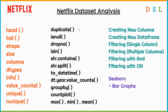To remove the duplicates, we will use the Duplicate function. To find the null values, we will use the IsNull function. To drop the null values, we will use DropAny function. We will use IsIn function, str.Contains function, str.Split, ToDateTime function, and dt.Year.ValueCount function. To make groups, we will use GroupBy function. To draw the bar graph, the count plot, and the mean, max, and mean function.